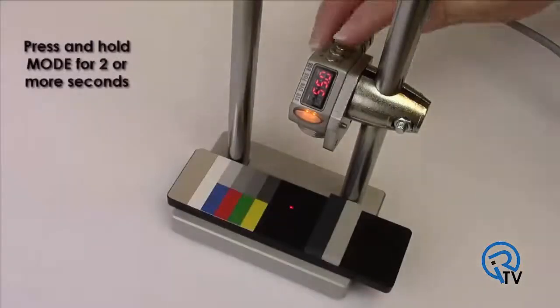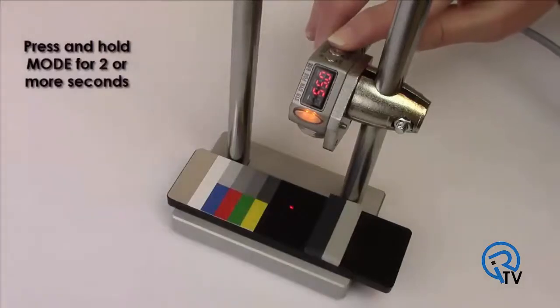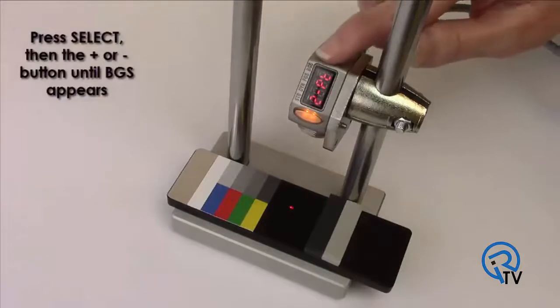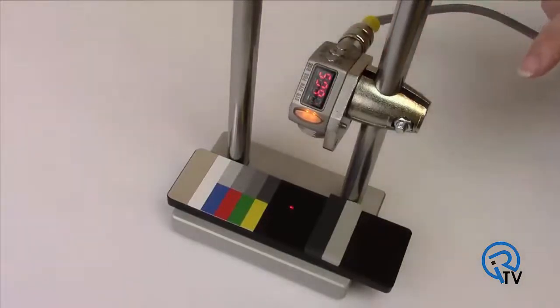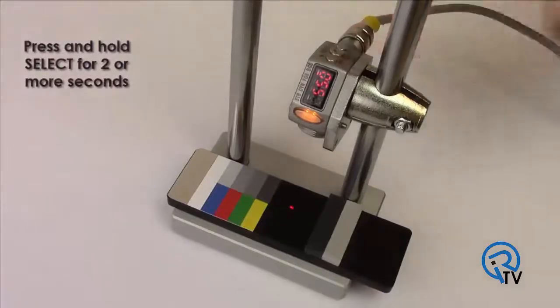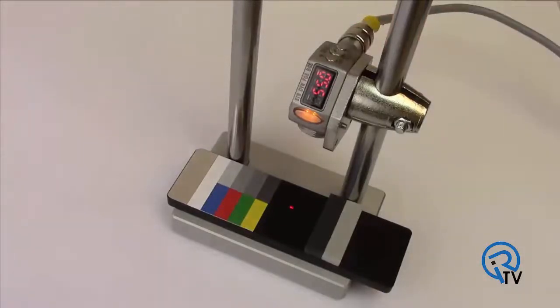Press and hold mode for two or more seconds. Press select. Then press the plus or minus button until BGS appears. Press and hold select for two or more seconds. The display flashes and returns to run mode.